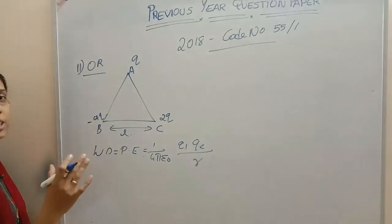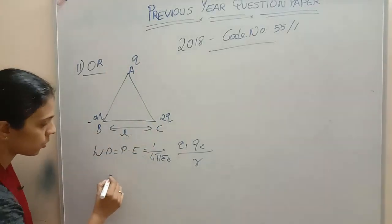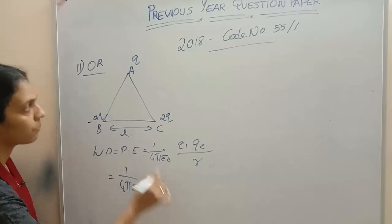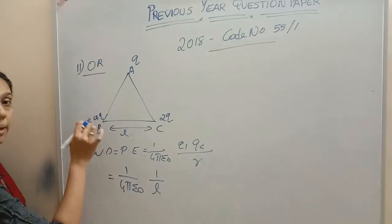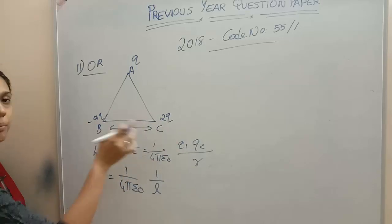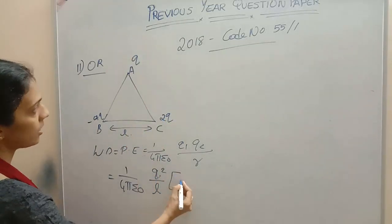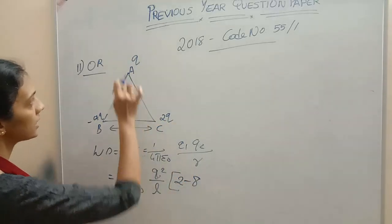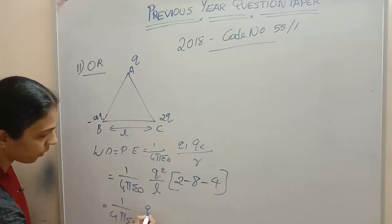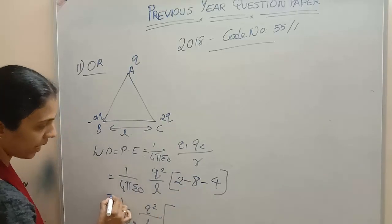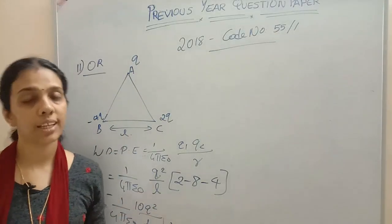The work done to move the charges to infinite distance equals the total potential energy. We should consider all three pairs. So: 1 by 4 pi epsilon 0 times 1 by L, into Q times 2Q — that is 2Q squared for AC — plus Q times minus 4Q — that is minus 4Q squared for AB — plus minus 4Q times 2Q — that is minus 8Q squared for BC. Q square is common, so: 1 by 4 pi epsilon 0 times Q square by L times (2 minus 4 minus 8) equals 1 by 4 pi epsilon 0 times Q square by L times minus 10.